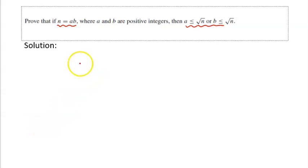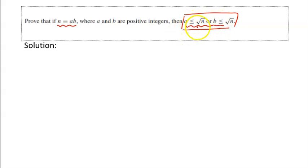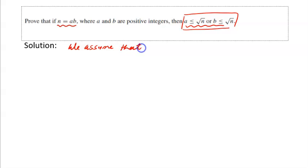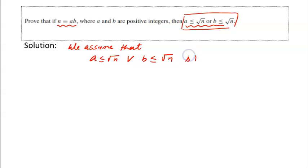In proof by contraposition, we start with the negation of q. Here q is the statement that a is less than or equal to the square root of n, or b is less than or equal to the square root of n. So we assume that negation of q is true — that is, we assume that a is less than or equal to the square root of n, or b is less than or equal to the square root of n, is false.